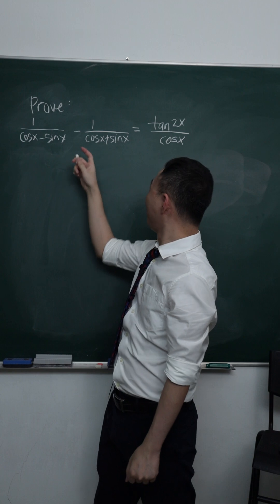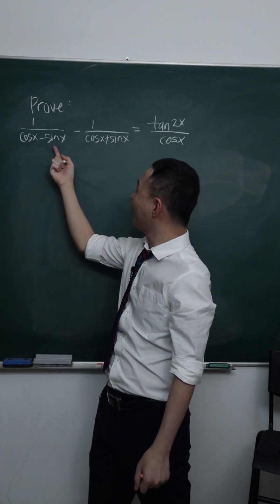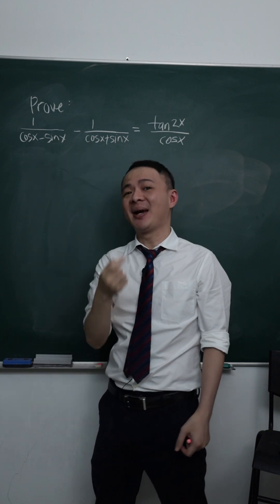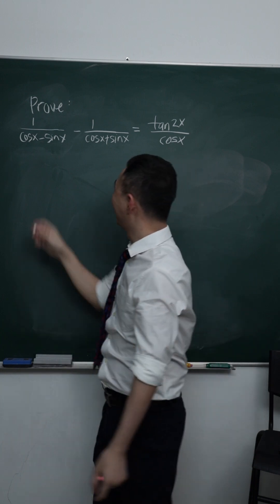Alright, so for me, I will start from the left hand side, because more information. And from the left hand side, it's quite obvious. You have two fractions, make them have the same denominator, so that they can do any plus and minus. Make sense? Alright.